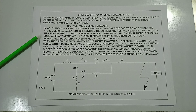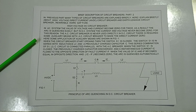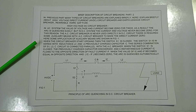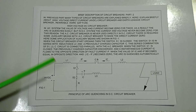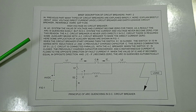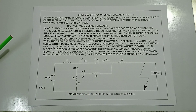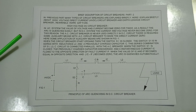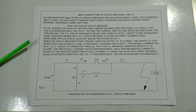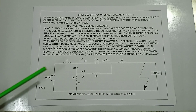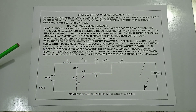Some auxiliary means are required with an AC circuit breaker to make the direct current zero. As shown in Figure 1, when the circuit breaker starts opening, switch S1 is closed. S1 is in series with inductance L3 and a previously charged capacitor C. This series combination of S1, L3, and C is connected in parallel with the AC circuit breaker.